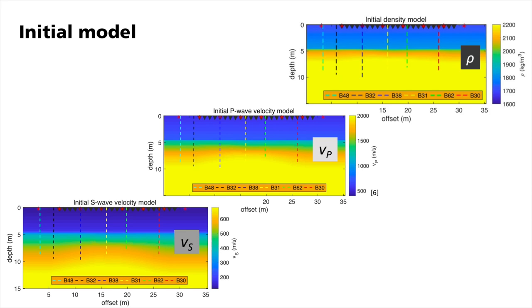Additionally, we also included some prior information from the borehole data. The values of the models increase over depth. At around 5 and 6 meters, two boundaries lead to a sharp increase of the respective values, followed by a smooth gradient. These are the starting conditions.